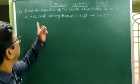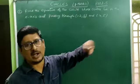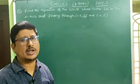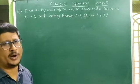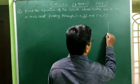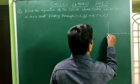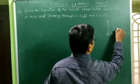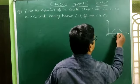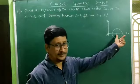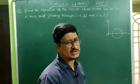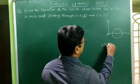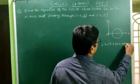Let's go to the next problem. Find the equation of the circle whose center lies on the x-axis and passing through (-2, 3) and (4, 5). First let us consider the coordinate axes. The center of the circle lies on the x-axis.